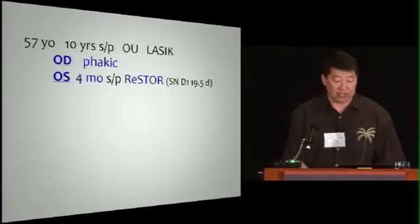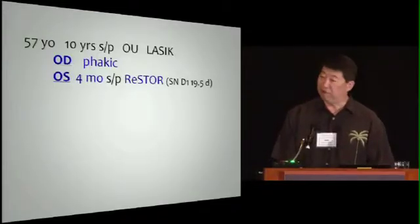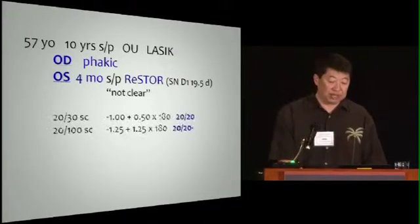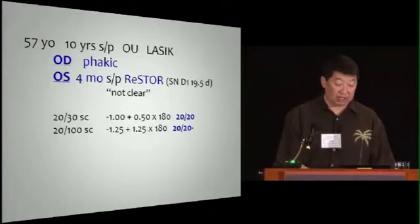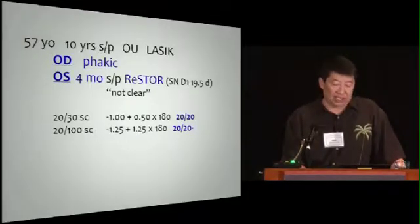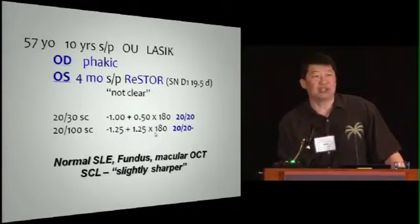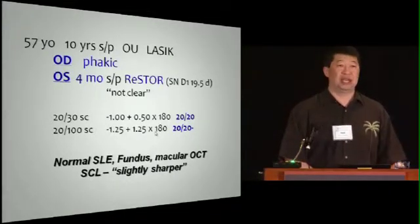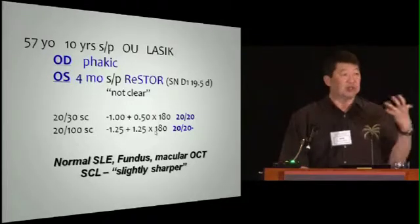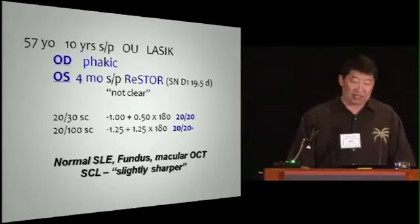In this case, I have a happy Restore patient. This woman is young, she's 10 years post-myopic LASIK. The right eye is phakic, and this is four months after a Restore 3.0, but that eye is not clear. No wonder she's not happy — her uncorrected acuity is 20/100, and she's got residual myopia and cylinder. The recommendation was made to do some more LASIK enhancement. Everything including the macular OCT was normal. Usually what you want to do is try glasses or contact lens, so this was done — you want them to know what would happen if you tuned up the sphero-cylinder residual refractive error — and then you can see the multiple focality. It was slightly sharper, but she was still unhappy enough to get a second opinion.